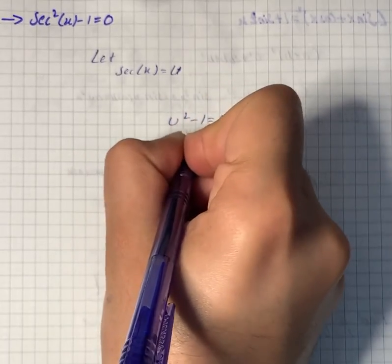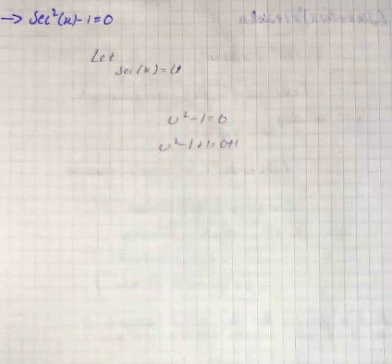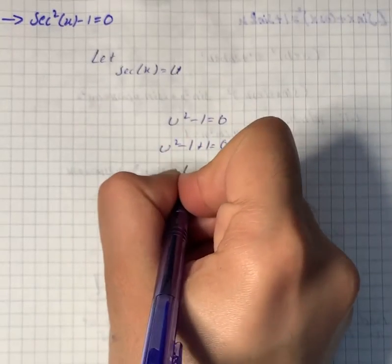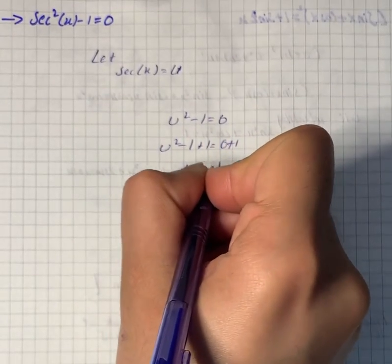And u squared minus 1 plus 1 equals 0 plus 1, as we added 1 on both sides. So we have u squared equals 1.